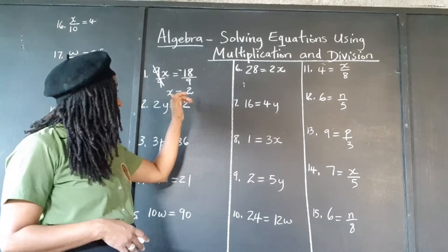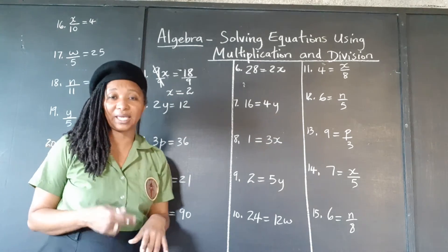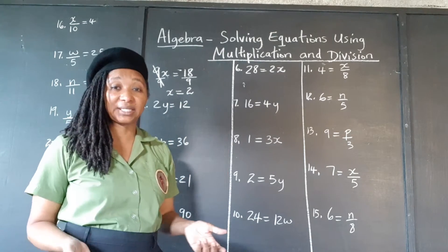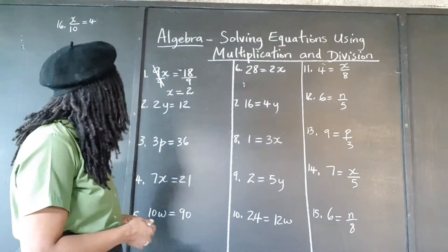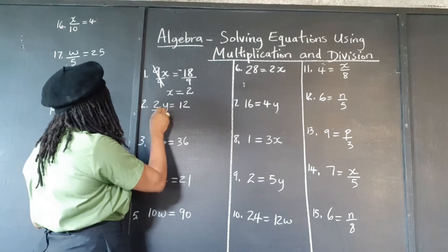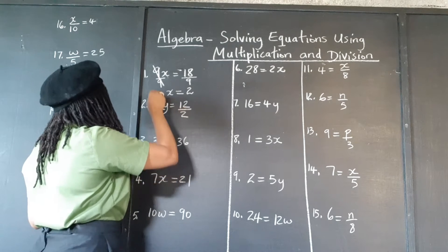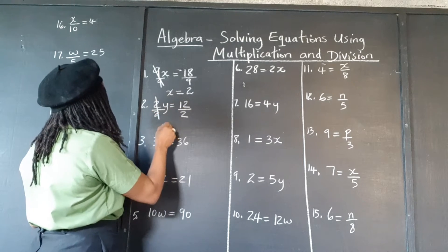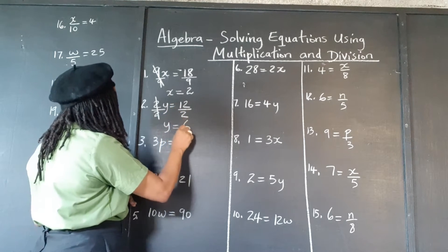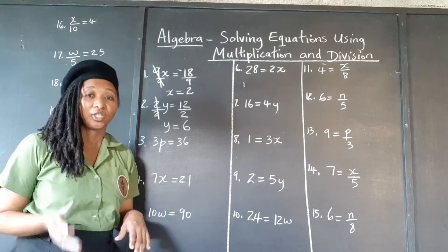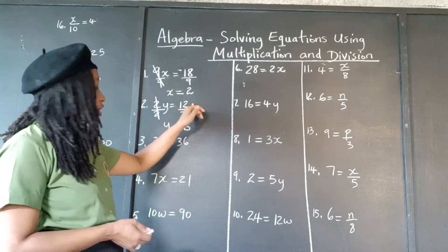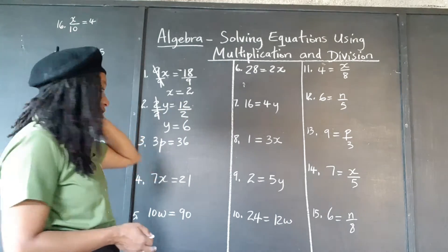If we plug back 2 into the original equation, 9 times 2 does give 18. We can always substitute that value back into the original equation to see if it works. So we have 2 times what number gives 12. We're going to divide both sides by 2, and that cancels out the 2. We're left with y is equal to 12 divided by 2, which gives 6. So y is equal to 6. To check: 2 times 6 does give 12, so we know that we are correct.